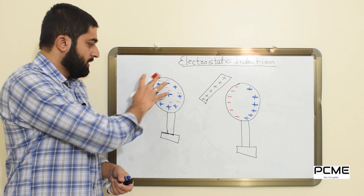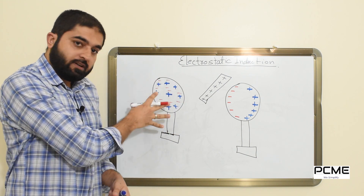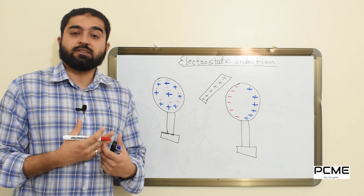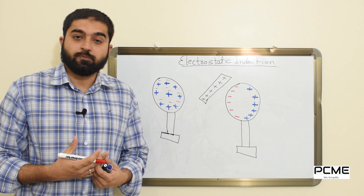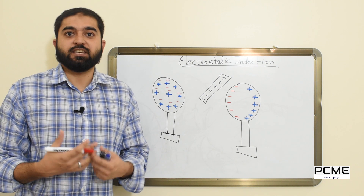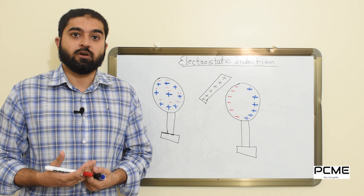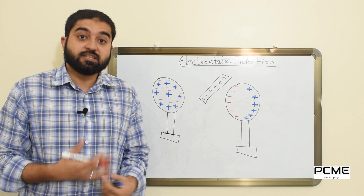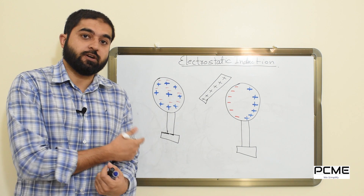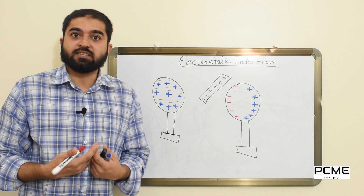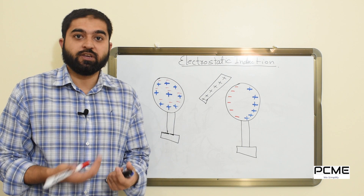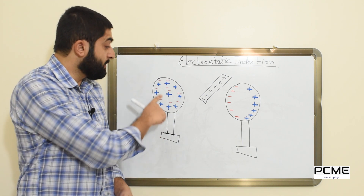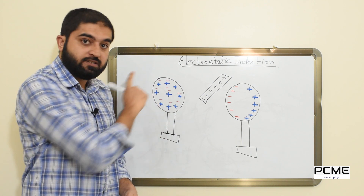Under normal circumstances this sphere is neutral, which means it has an equal number of positive charges and negatively charged particles. Since it is made up of a conductor, it has free electrons in it which are moving randomly, as shown by the negative charges in the diagram.